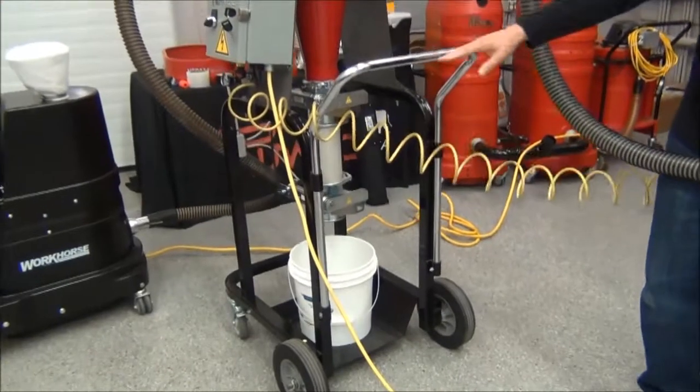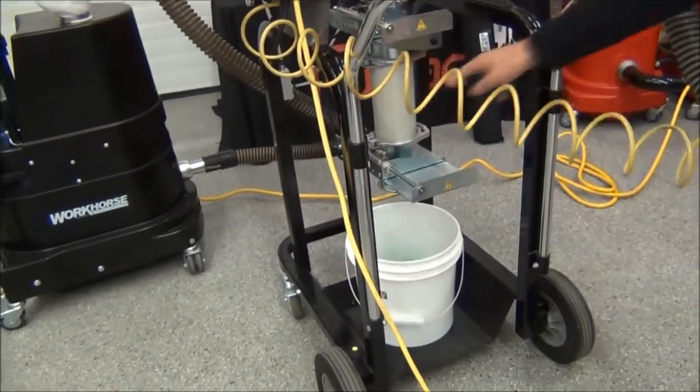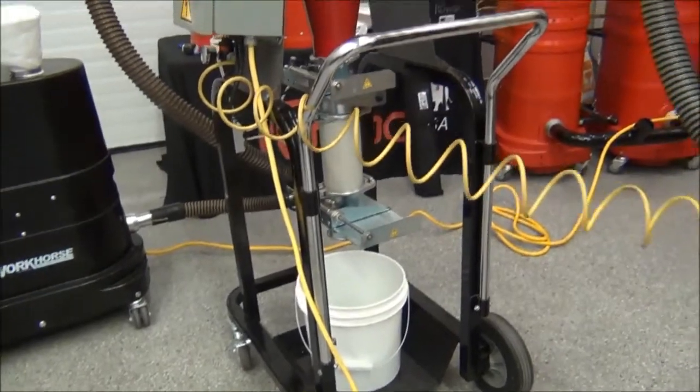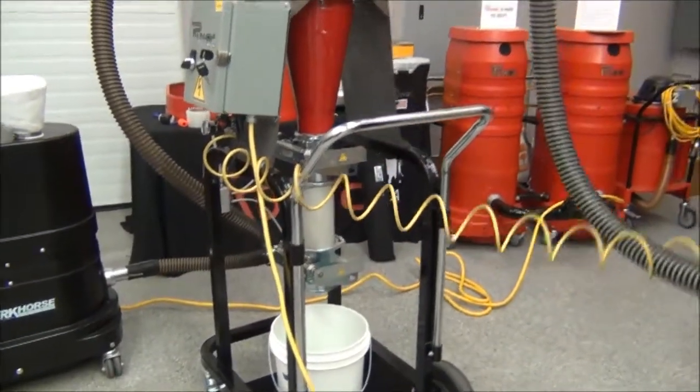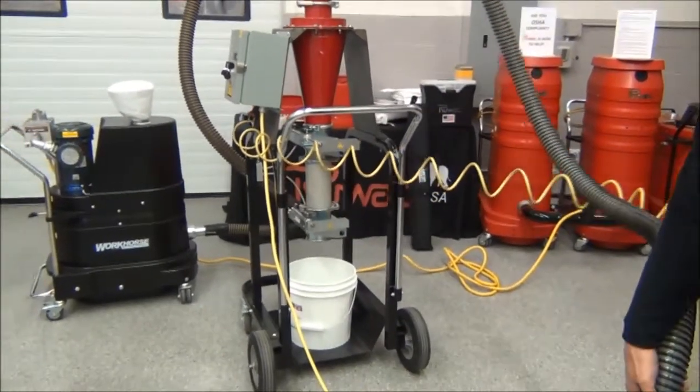This is shown on a portable frame. We also make it on a stationary frame, and we can change the distance of the tube and the timing of the blast gate. This can be dialed in for different types of materials.